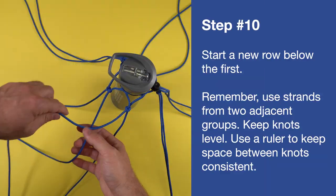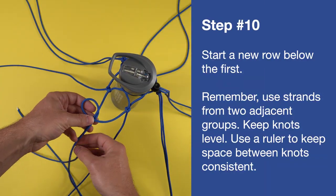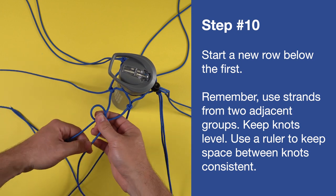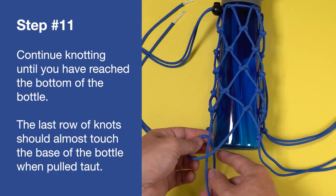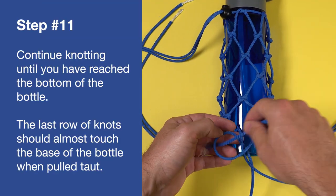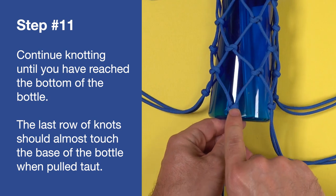Start a new row below the first. Remember, use strands from two adjacent groups. Keep knots level and you can use a ruler to keep space between knots consistent. Continue knotting until you have reached the bottom of the bottle.